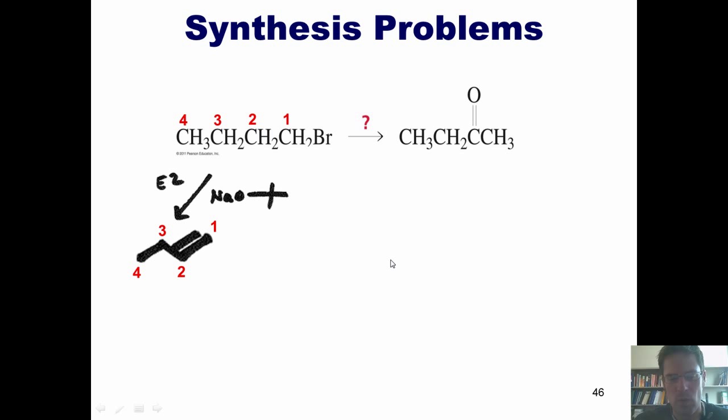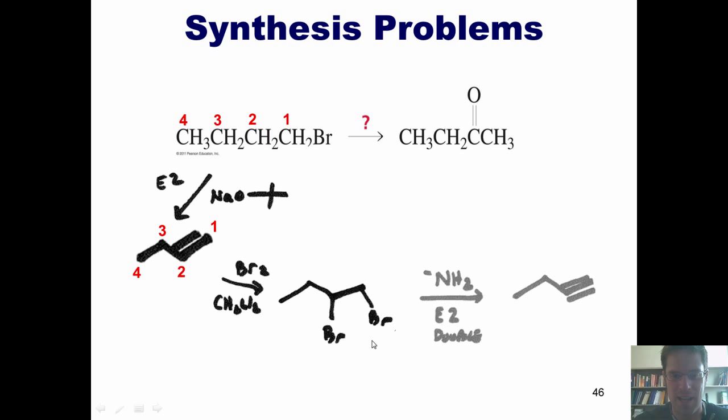At this point, we can now take this molecule and treat it with bromine and a non-water solvent to generate a vicinal dibromide, in which these two bromines are neighbors to each other. Why in the world would I want to do that? Well, the reason is because under the conditions I showed you in an earlier slide today, you can treat this with sodamide, or NaNH2, and have this negatively charged NH2 do a double E2 elimination to form an alkyne.